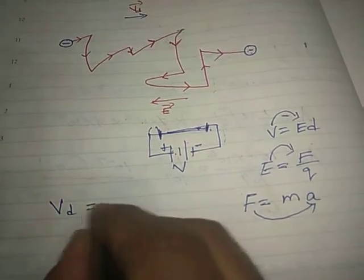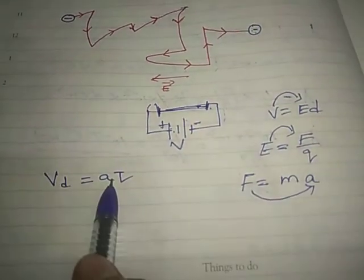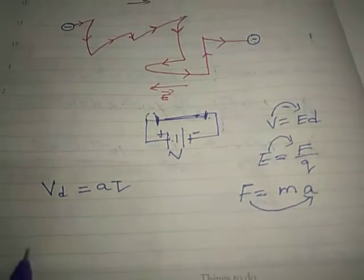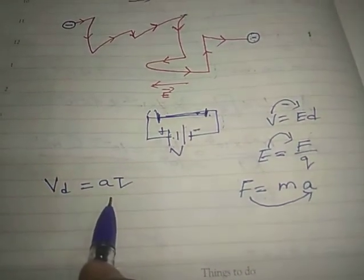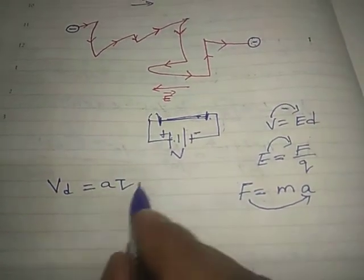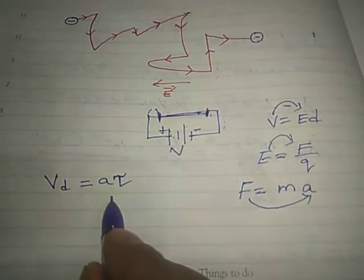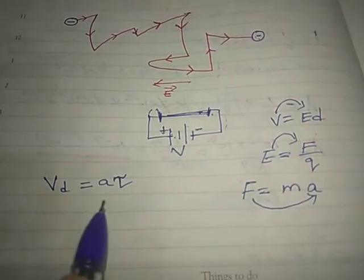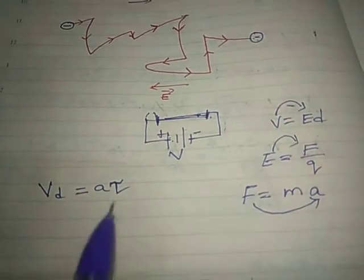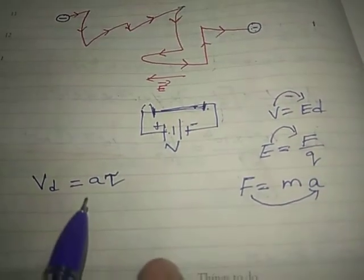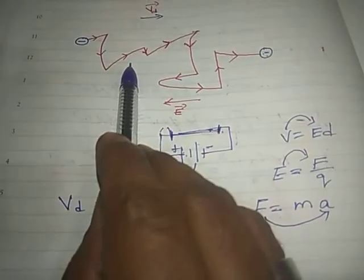Vd is equal to a times tau. Vd is the drift velocity, a is the acceleration, and tau is a new term. Tau is nothing but the mean time between successive collisions — that is, the time interval between successive collisions of the electron.